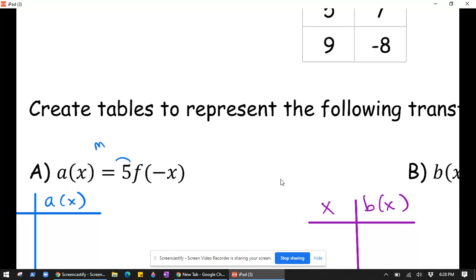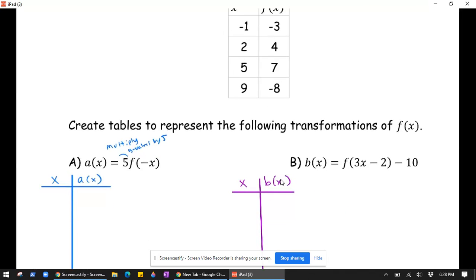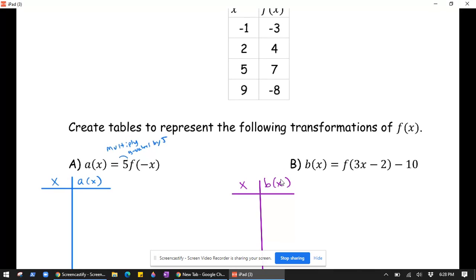Specifically, we're going to multiply the y values by 5, and in fact we can do that right now. So that will result in the values negative 15, 20, 35, and negative 40.